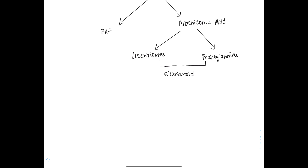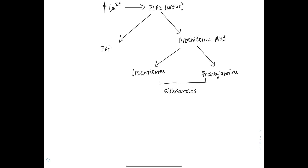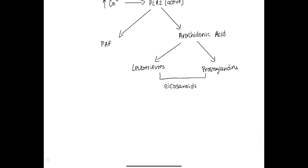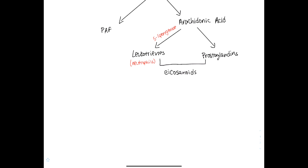Let's talk about what enzymes are actually going to help convert arachidonic acid into our eicosanoids. For leukotrienes, we're going to have this enzyme called 5-lipoxygenase, and 5-lipoxygenase is going to convert arachidonic acid into leukotrienes. This is a dominant pathway in cells like neutrophils. On the other hand, we'll have a different enzyme called cyclooxygenase, often abbreviated as COX, and your COX enzyme is going to convert arachidonic acid into prostaglandins.